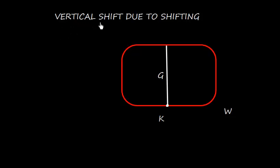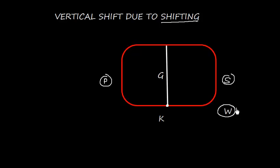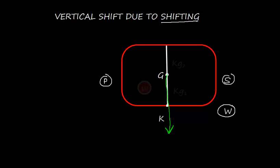Let us discuss the vertical shift of center of gravity due to shifting. This is the vessel and we are looking at it in the transverse direction, that is port and starboard. The displacement of the vessel is capital W. The center of gravity of the vessel is denoted by capital G, so we say the KG of the ship is the distance of center of gravity from keel, and the weight W acts vertically downward.